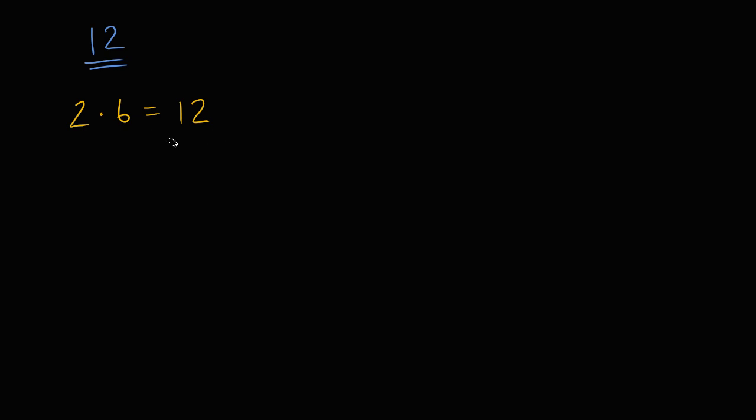So because if you take the product of two and six, you get 12, we could say that two is a factor of 12. We could also say that six is a factor of 12. You take the product of these things, you get 12. You could even say that this is 12 in factored form. People don't really talk that way, but you could think of it that way, that we broke 12 into the things that we could use to multiply it.